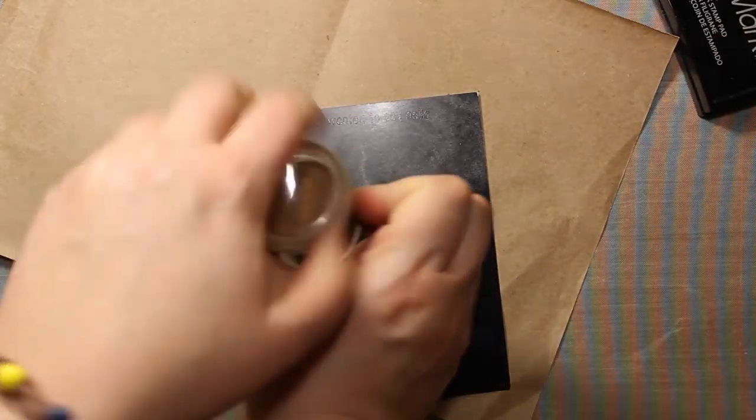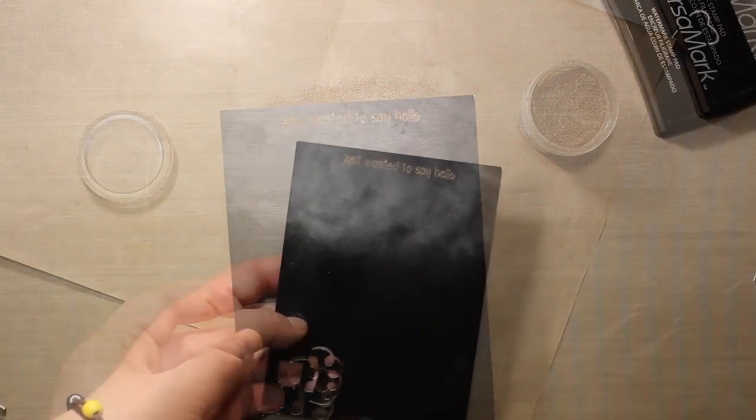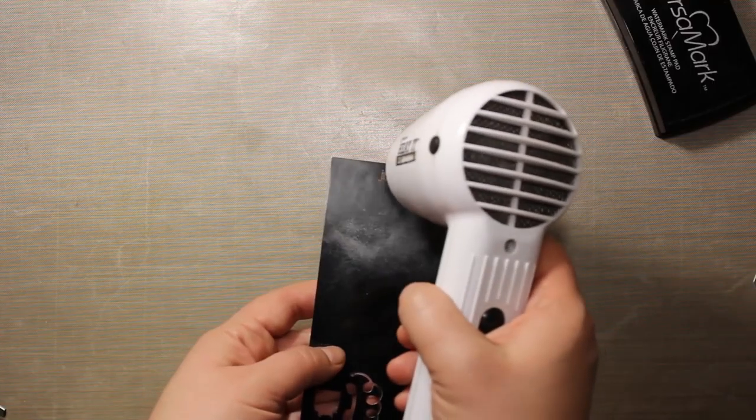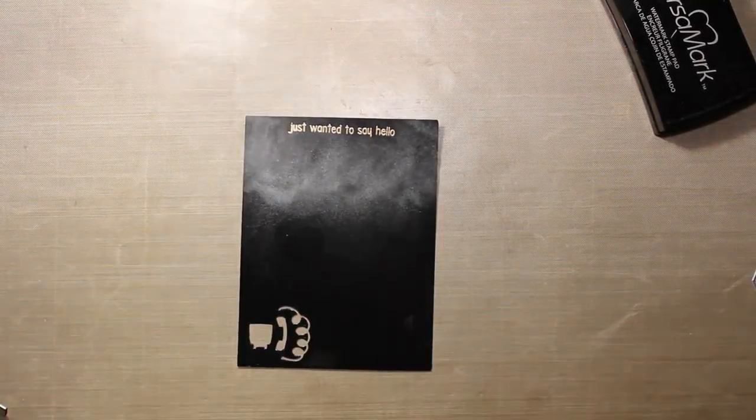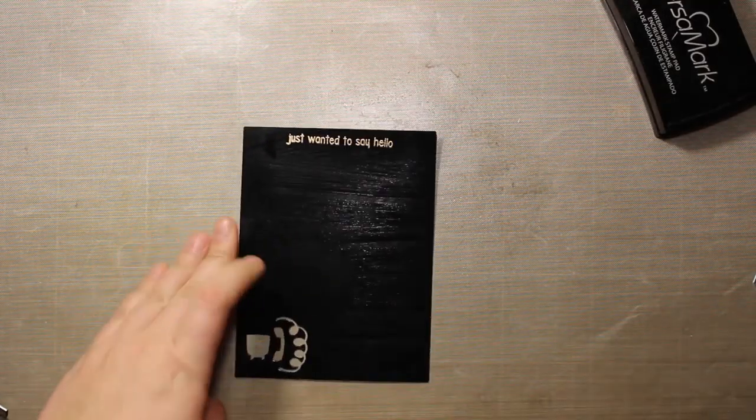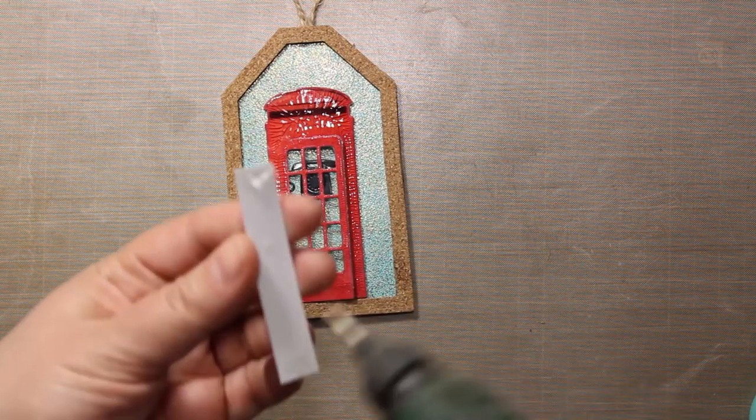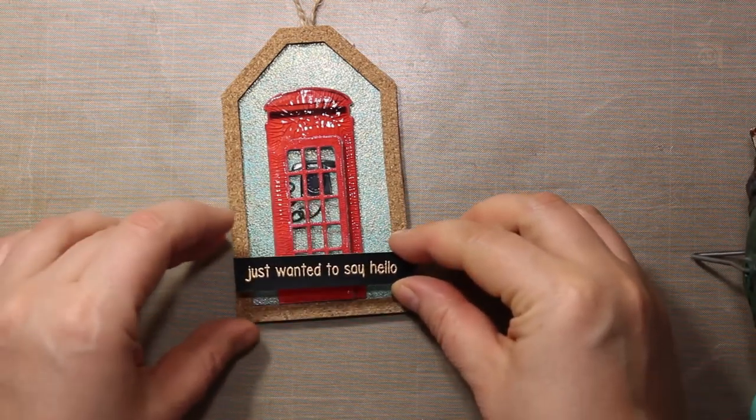To create the sentiment I'm going to use the same glossy cardstock that I used for the phone. I have treated it with anti-static powder and now I'm going to gold emboss the phrase 'just wanted to say hello'. This sentiment is from the stamp set called Call Me. After I heat set the sentiment I can remove the anti-static powder with a baby wipe.